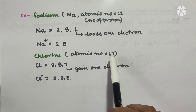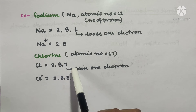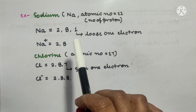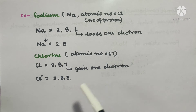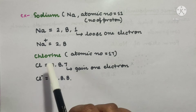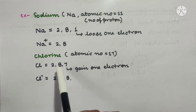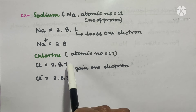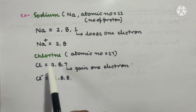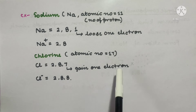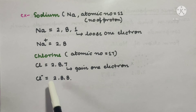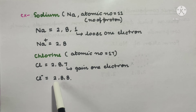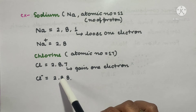In the same way, if we take a chlorine atom, its atomic number is 17 and its electronic configuration is 2, 8, 7. The outermost shell has 7 electrons, and it needs 1 more to complete 8. So chlorine gains 1 electron, which gives it a negative charge. This is why it is written as Cl-. Its stable electronic configuration becomes 2, 8, 8.